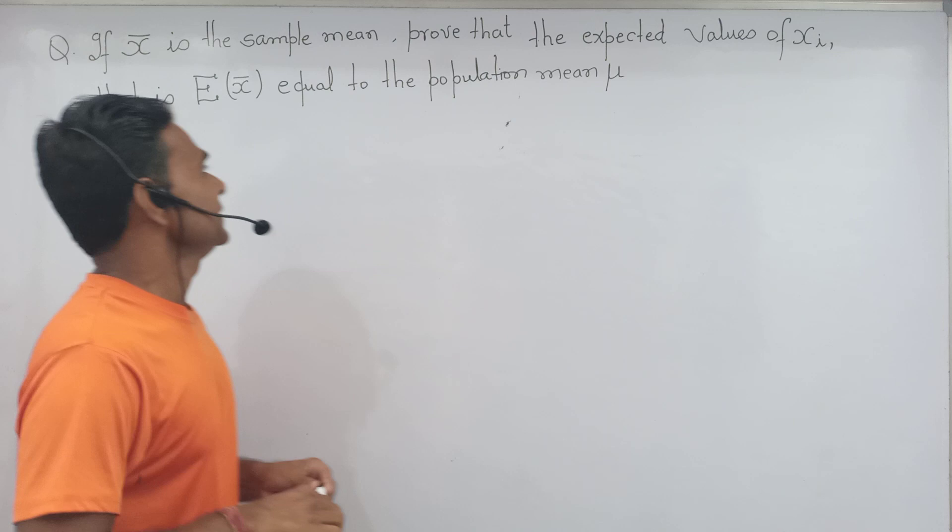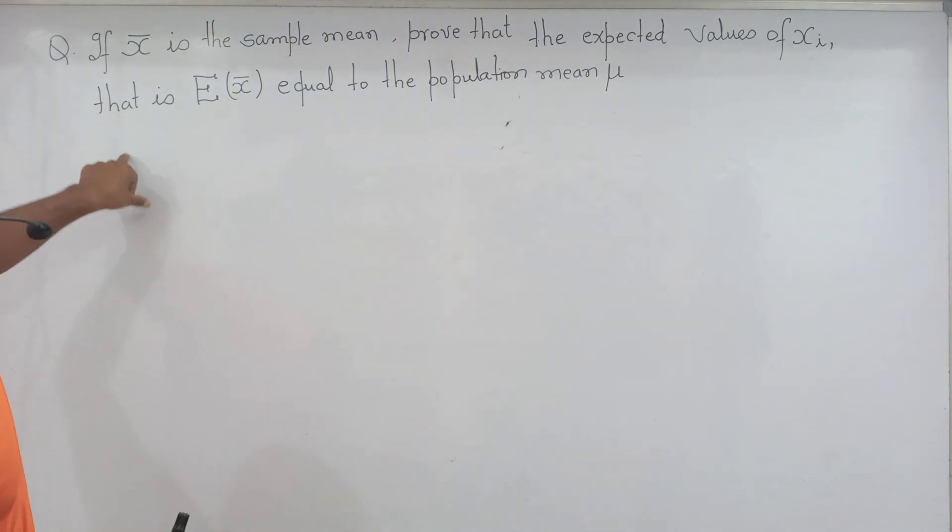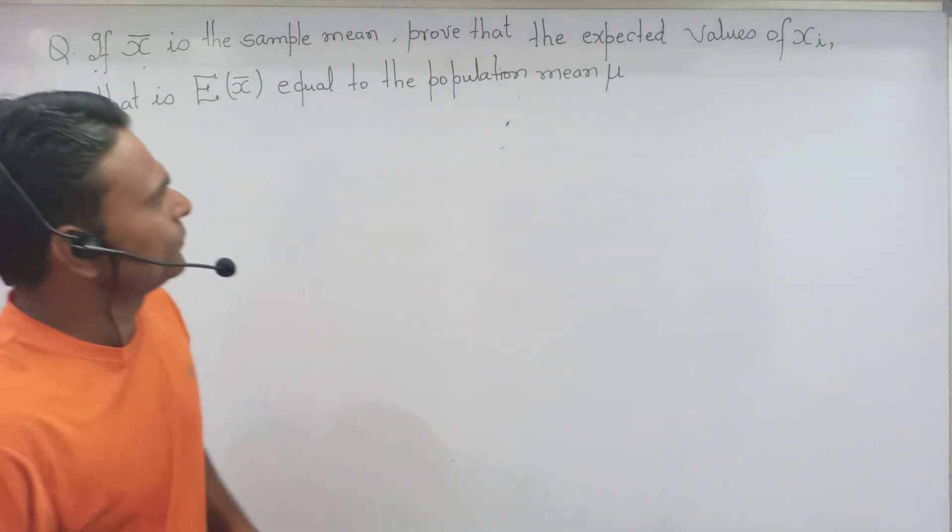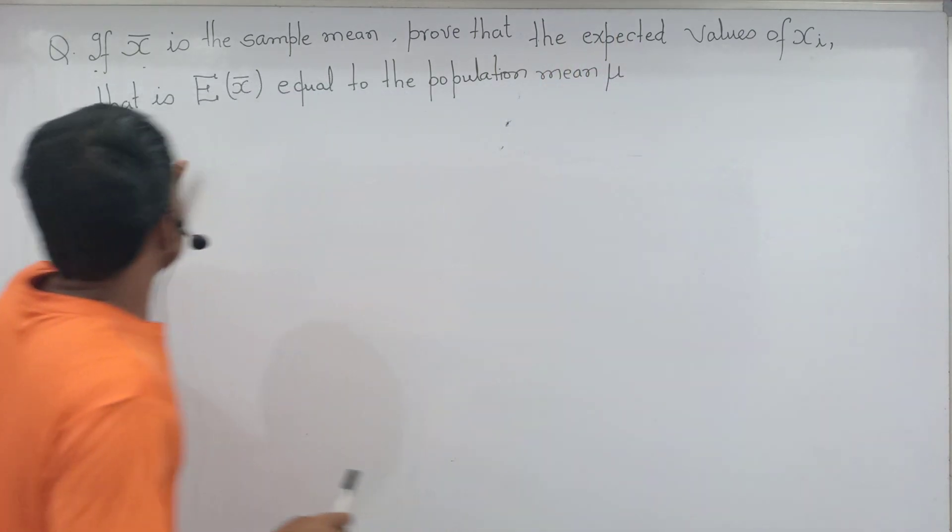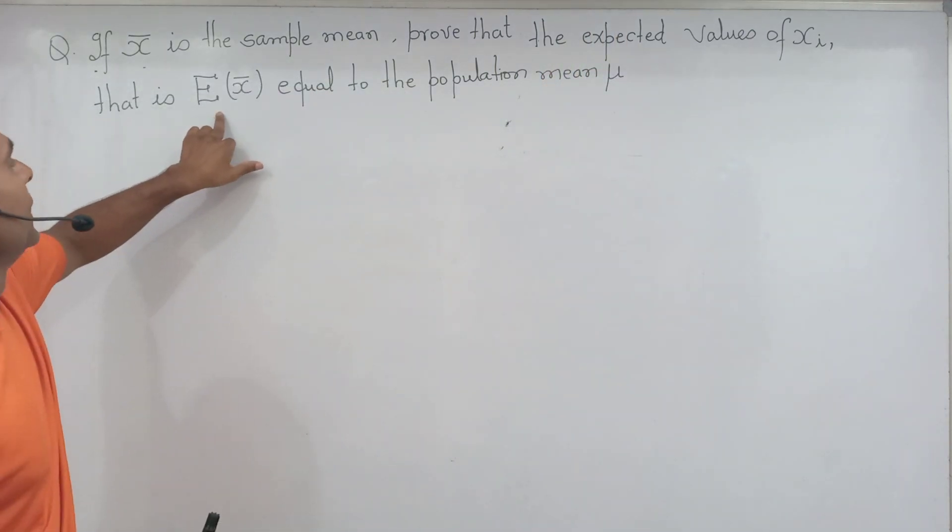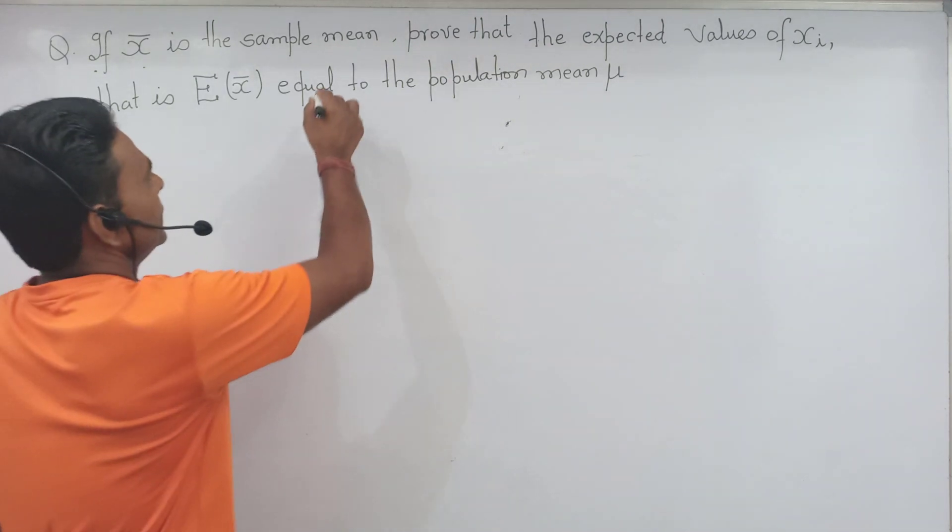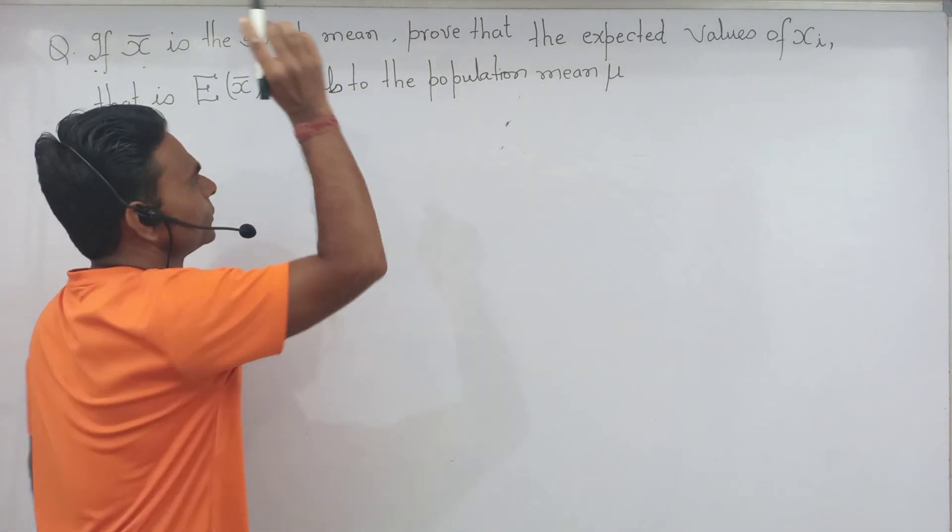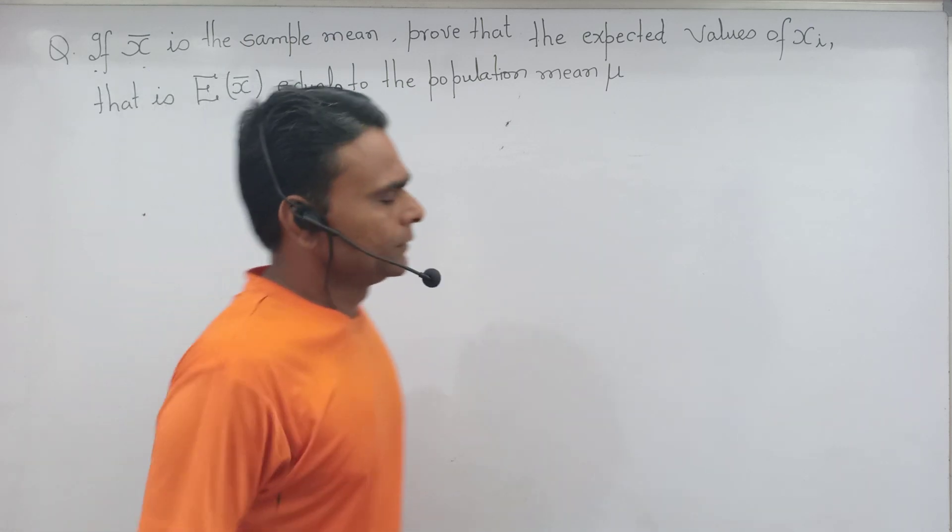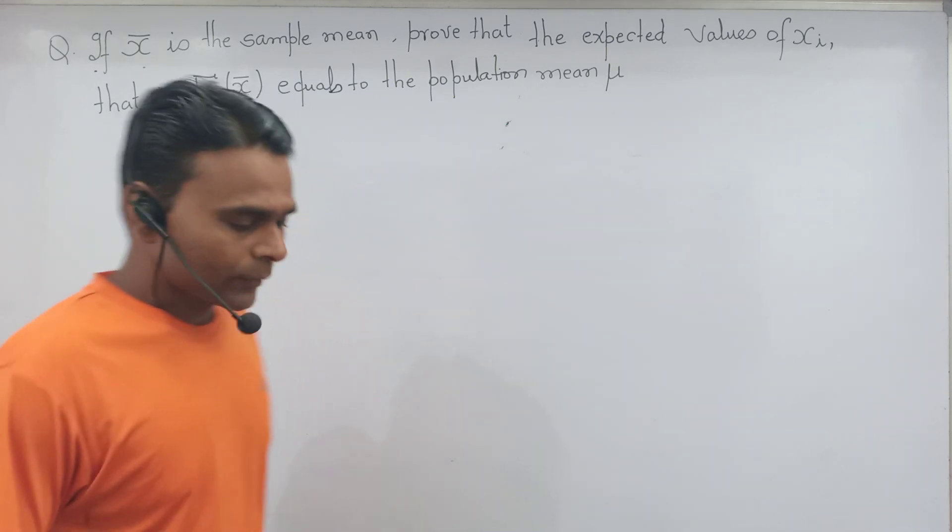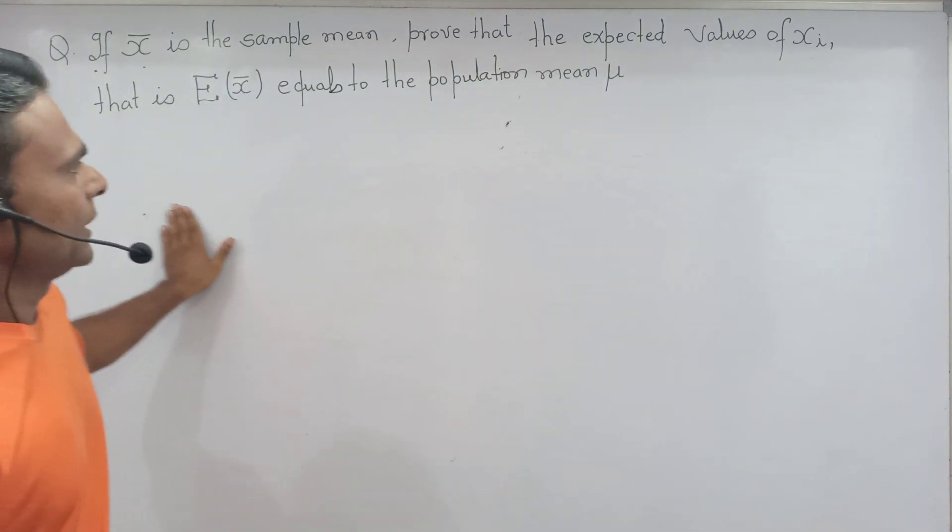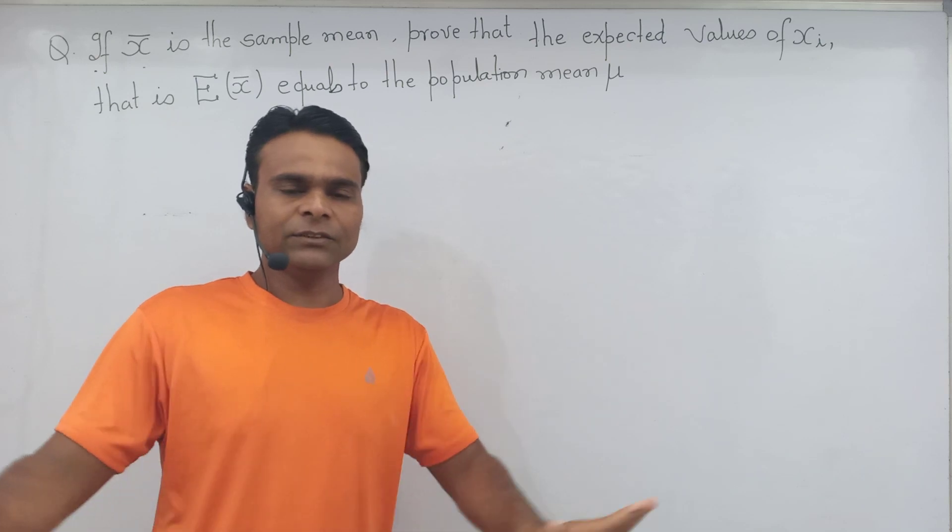Question is here, we have to prove that if X dash is the sample mean, prove that the expected value of X̄, that is expected value of mean equals to the population mean μ. So this question can tell us, we have to prove that it is very easy to learn. You need to keep watching my video till end.